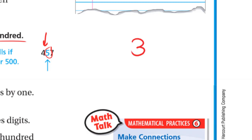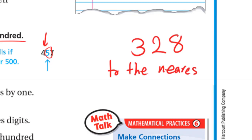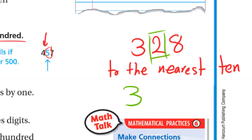Let's try another example: round 328 to the nearest 10. The tens digit is 2, so it will be 20 or 30. We look at the digit to the right of 2, which is 8. Since 8 is a strong digit, the 2 increases by 1 to become 3, so the answer is 330.